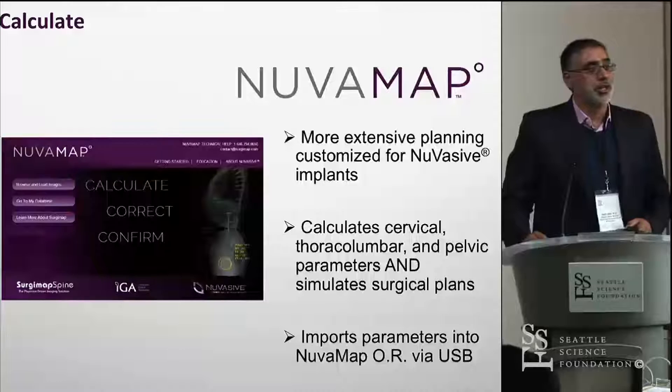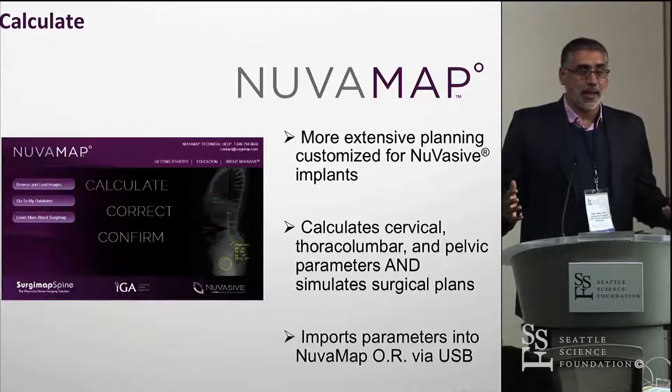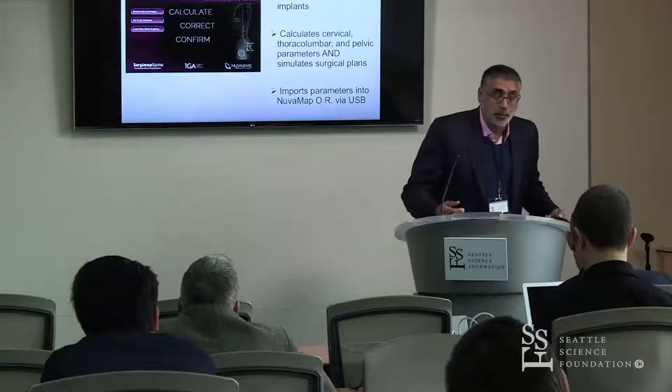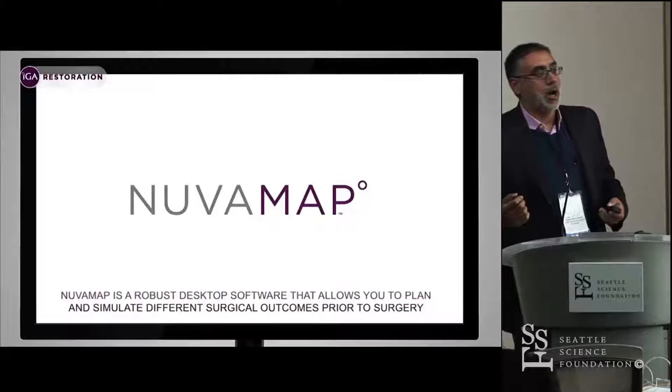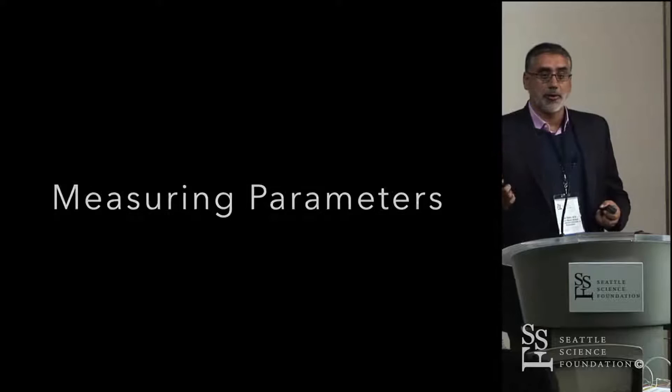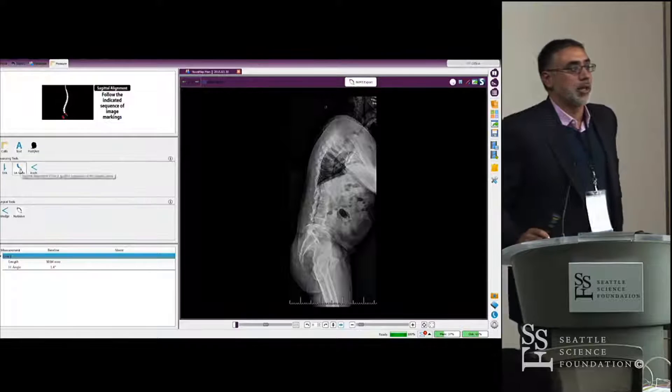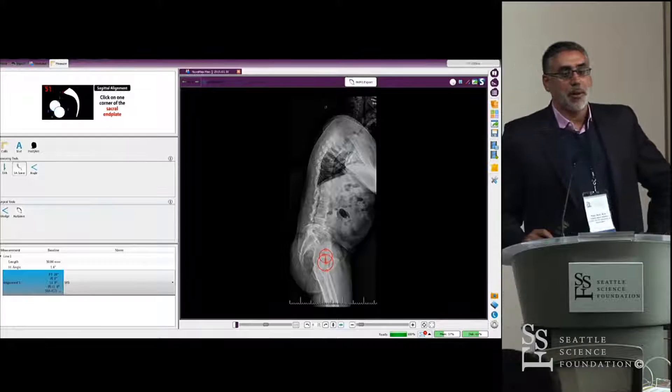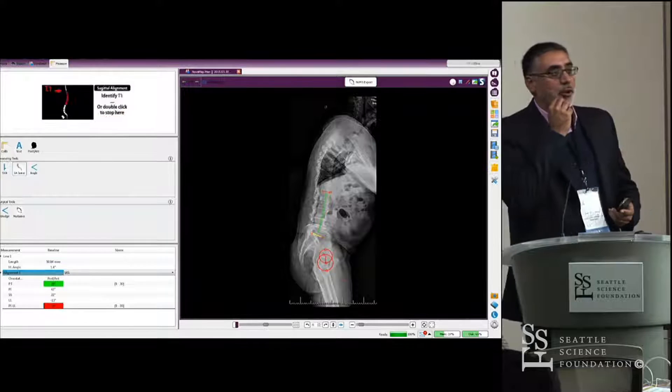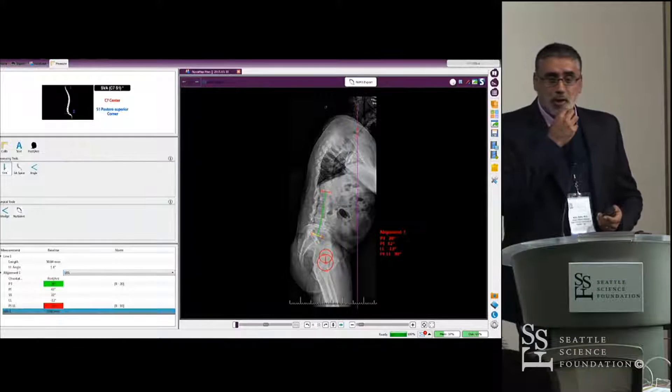This leads to the intraoperative portion, which is NuvaMap. Remember, spinal alignment is dynamic — is your patient standing or are they lying down? What happens to the spine when you put the patient prone and extend the hips? This all takes that into account. So this is preoperative software, and I'm going to show you how we measure the parameters and then translate them to the operating room. Here's a significantly forwardly flexed patient. We're not going to teach you how to measure the parameters — we're just going to show you the technology. Obviously we think this is really important, particularly if you're doing long segment fusion surgery, but even if you're doing simple spinal surgery, this is really important.